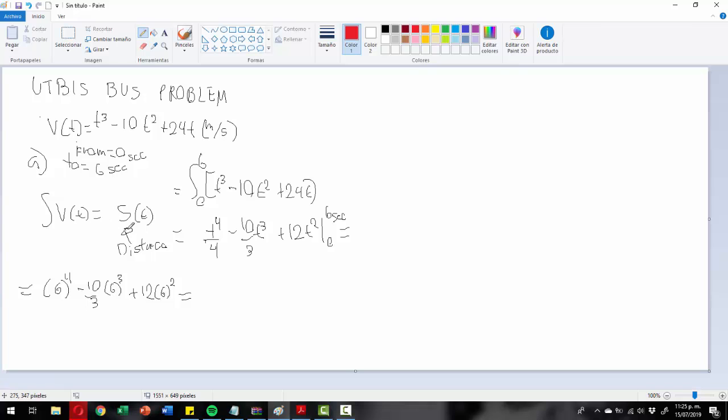Remember, the integral of velocity is distance. This has to be clear because the area under the velocity curve is precisely distance. Now we have to integrate this function from 0 to 6 seconds, which gives us t⁴/4 minus 10/3·t³ plus 12t².